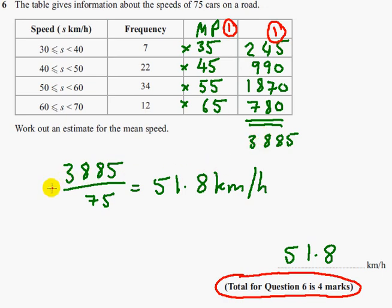The third mark comes here, dividing it by 75, and the last one comes from the final answer, and that's your four marks. And that's it.